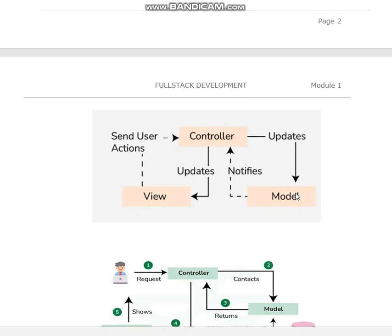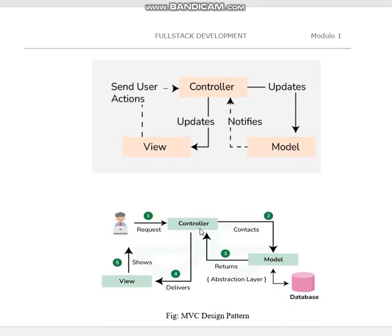The Controller updates the Model based on user input or application logic. The View requests data from the Model, the Model notifies the Controller, and the updated information is sent to the View. The View then renders the updated UI based on the changes made by the Controller. For example, the user requests a service, the Controller and Model update the database, and the View displays the result to the user.